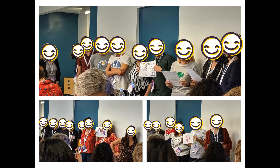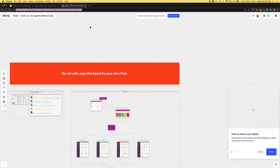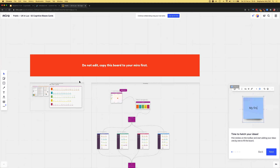For remote workshops, you need a tool with voice, a tracker, and breakout rooms — to put people into small groups for the two exercises. You can put cards on boards like Miro or Mural. You might also want a nice icebreaker to help people get comfortable with the remote tool. I've prepared a Miro board I can share — the fun part is you all have access; the not-fun part is you can all mess it up, so please copy it to your own board first.